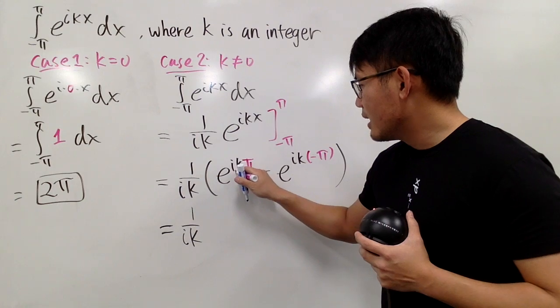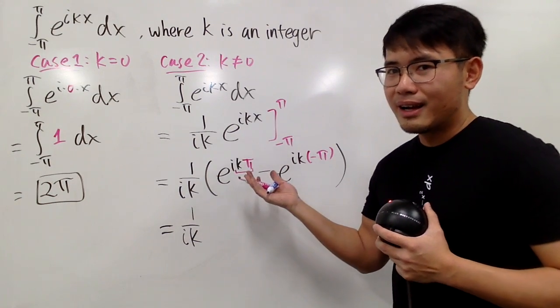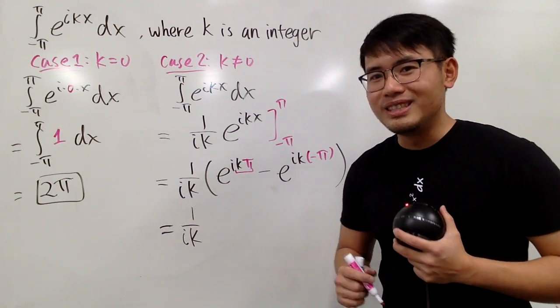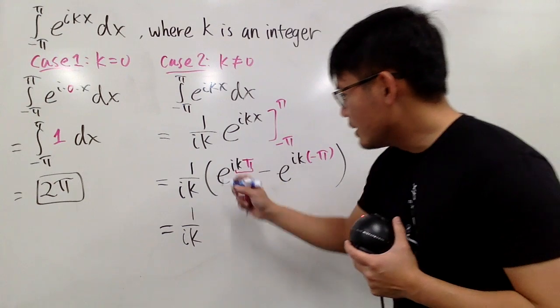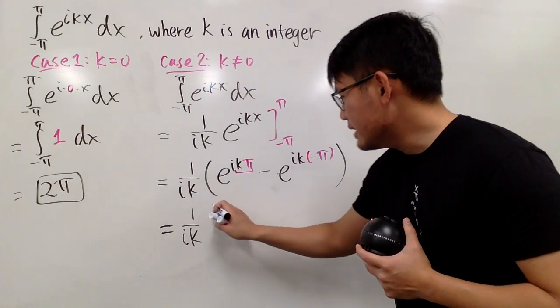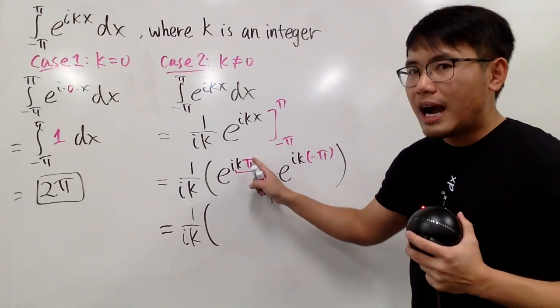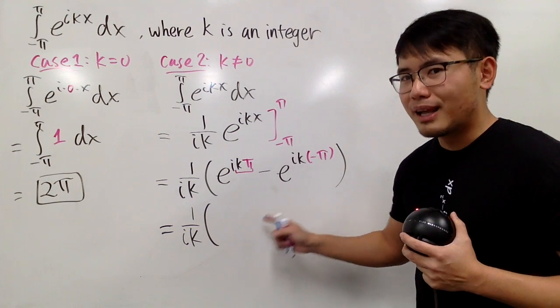This right here, k pi, is like a theta. And to take care of this, we can use the Euler's formula. So, I will just write this down right here for you guys. e to the i theta is cosine theta plus i sine theta.